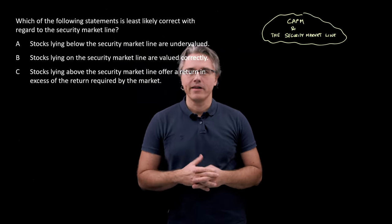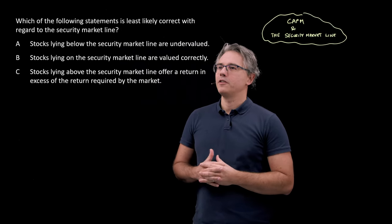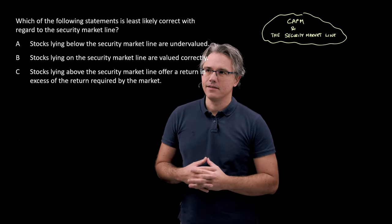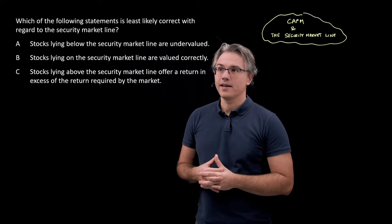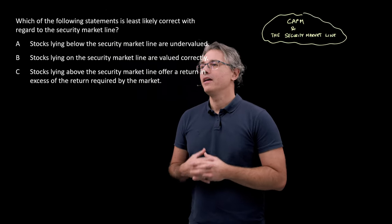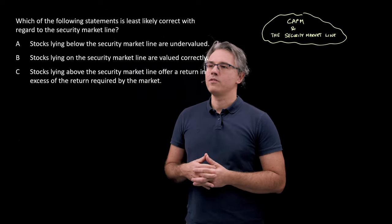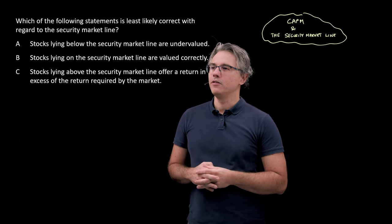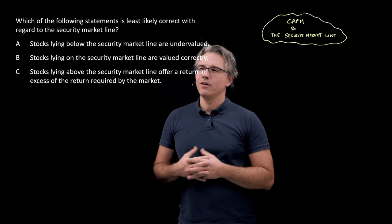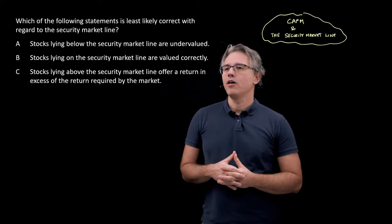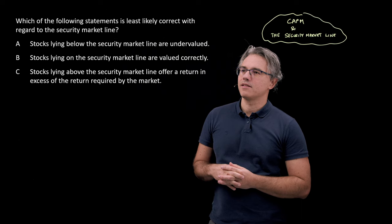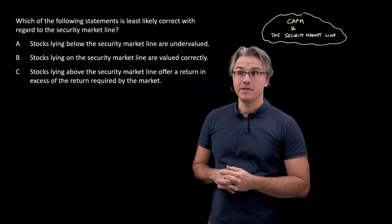So this is the question which I want us to have a go at. Which of the following statements is least likely correct with regard to the SML, the security market line? Stocks lying below the SML are undervalued. Stocks lying on the SML are valued correctly. Or maybe stocks lying above the security market line offer a return in excess of the return required by the market.